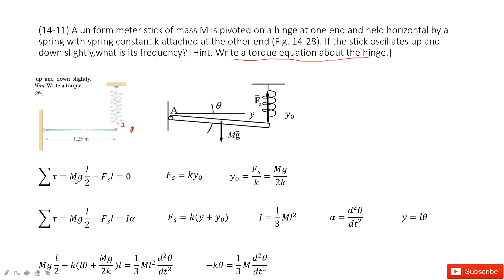Initially the system is statically balanced. We write the torque around the rotation axis. Gravity acts on the stick at its center of mass, pulling down. The spring exerts a force upward. The torque from gravity is Mg times L/2, and the torque from the spring force Fx is Fx times L.